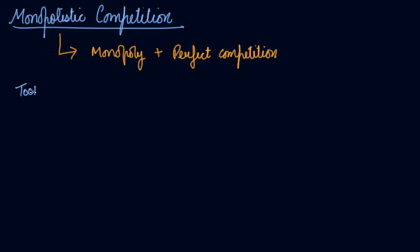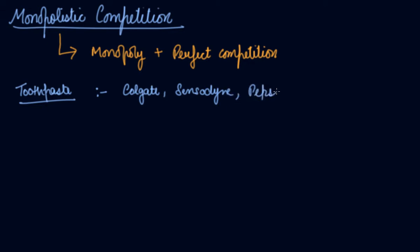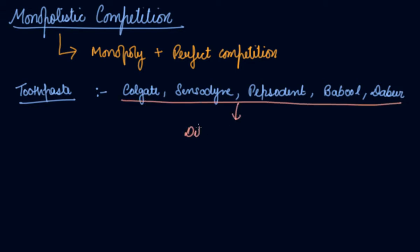Let's take the example of toothpaste. There are brands like Colgate, Sensodyne, Pepsodent, Babool, and Dabur. All these brands have different products that they are selling. They are selling toothpaste, but actually the product in it is a differentiated product. You can differentiate between the products sold by all these brands.